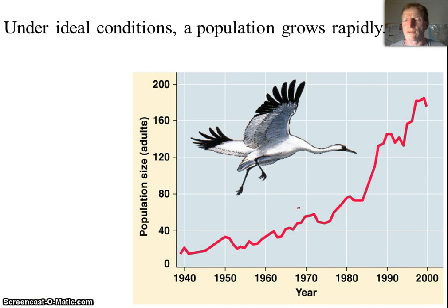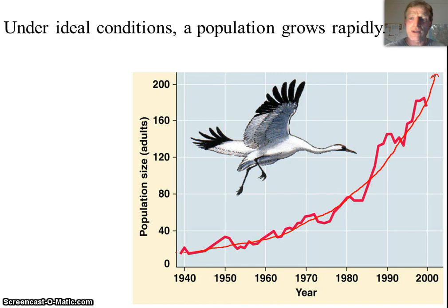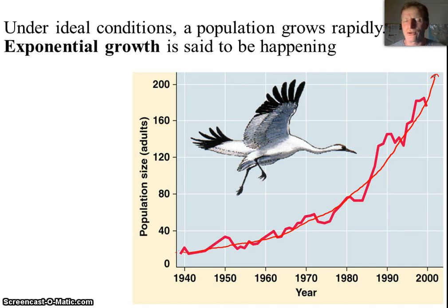Here's a good example of sandhill cranes. They were reintroduced to the United States in 1940, and as they continued to grow, you can see the population didn't grow at a constant rate, but at an ever-increasing rate. Now, this didn't happen forever — they have sort of reached a carrying capacity at a sustainable level.